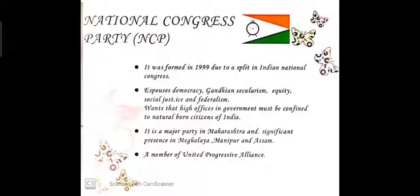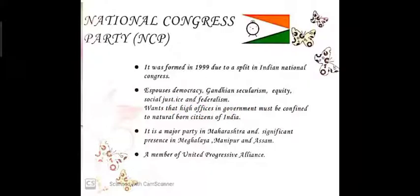The NCP was part of the Congress party — it was formed in 1999 due to a split in the Indian National Congress, meaning Sonia Gandhi's Congress party. The party espouses democracy, Gandhian secularism, equality, social justice, and federalism. It warned that the high offices in government must be confined to natural-born citizens of India.